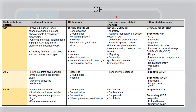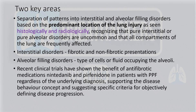CT features and time-and-space-related changes have been discussed. The two key areas are: first, the separation into interstitial and alveolar filling on the basis of histology and radiology — where is the injury? Interstitial is further divided into fibrotic and non-fibrotic. Data on the benefit of anti-fibrotic therapy has also been added, including nintedanib and pirfenidone in patients with progressive pulmonary fibrosis regardless of the underlying diagnosis. They have supported the disease behavior concept and suggested specific criteria for objectively defining disease progression.